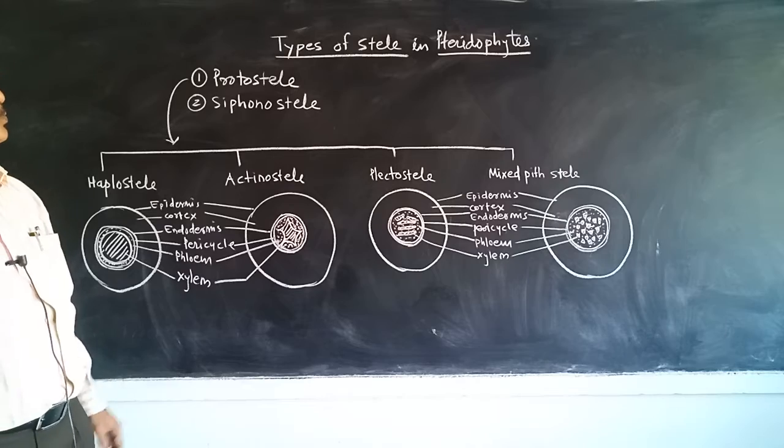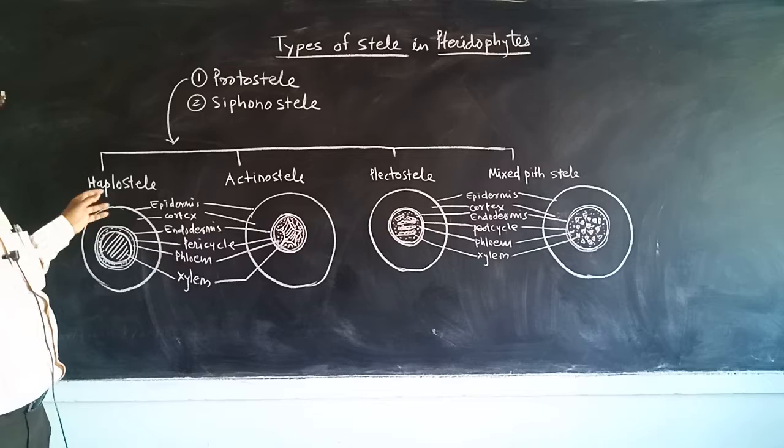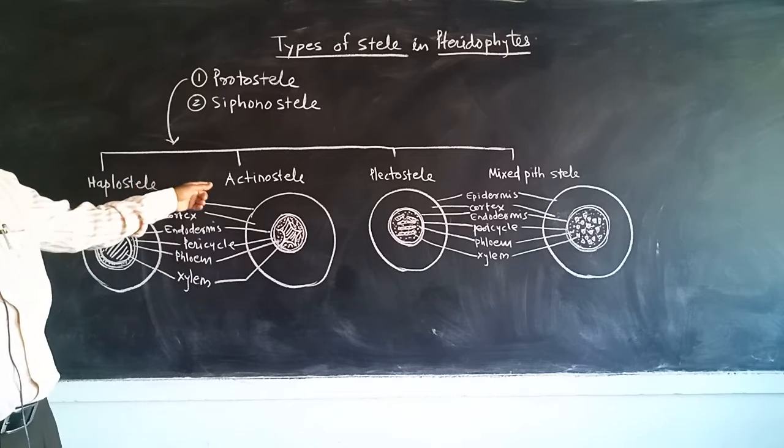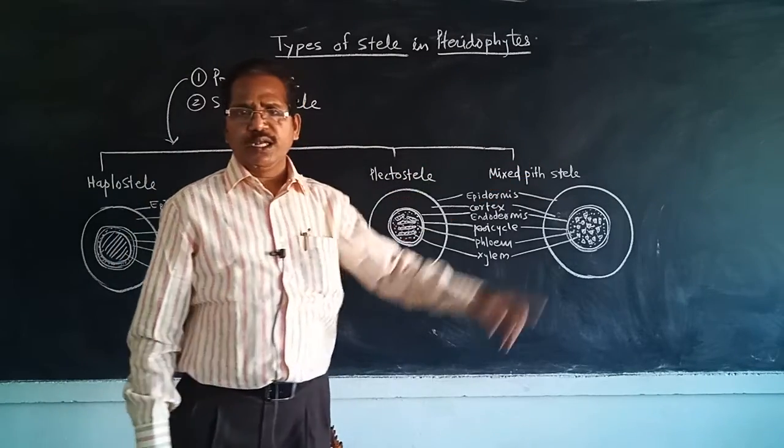The protostele is further subdivided into four types: haplostele, actinostele, plectostele, and mixed protostele.